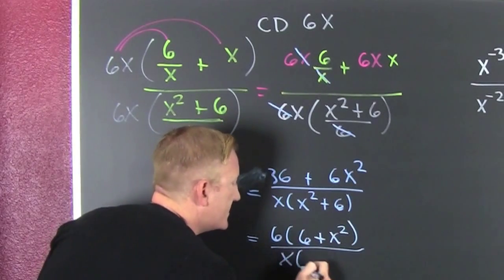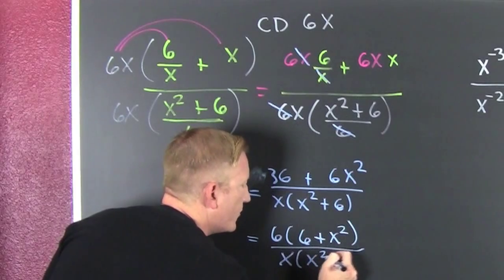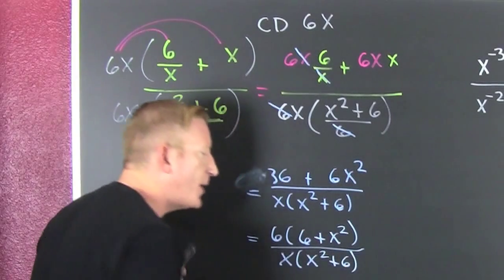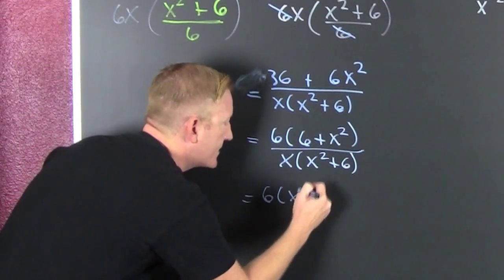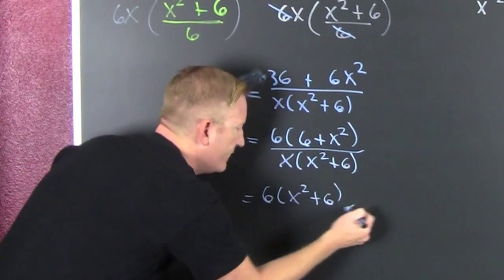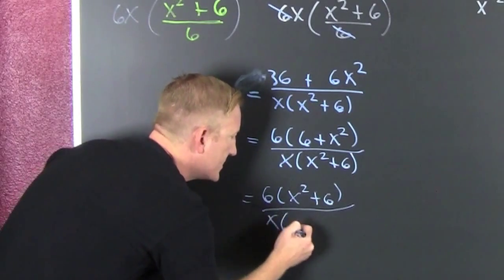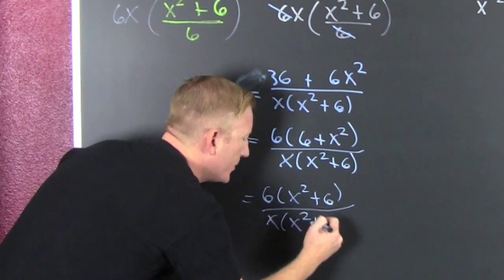And I have a 6 plus x squared. All over x times an x squared plus 6. Do I have anything that can reduce? I deduce that this is 6 times x squared plus 6.